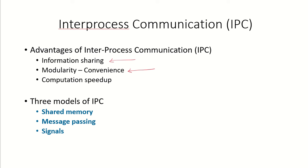Secondly, an application can be developed as separate modules, which becomes convenient for developers to build that application. These modules might want to communicate with each other. Third is computation speedup — when a particular task has been broken down into several subtasks, these subtasks can run concurrently, and the different modules may need to share data or communicate with each other. These are all advantages of inter-process communication and the reason why we have to develop various methods for processes to share information.